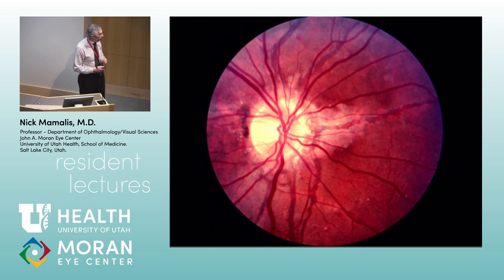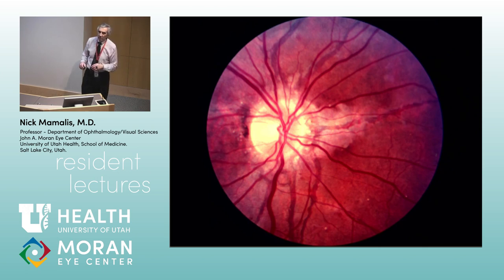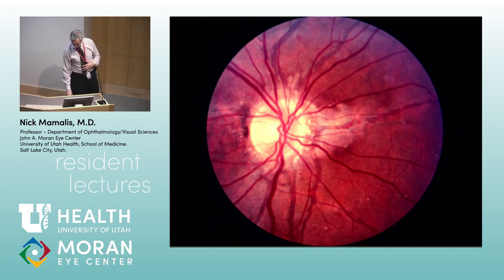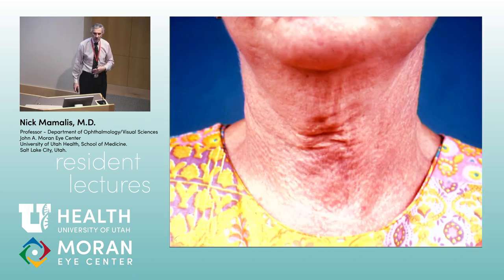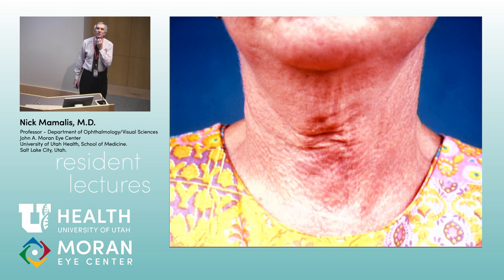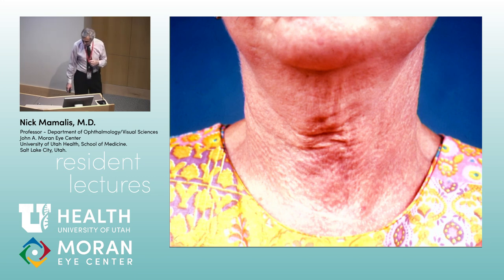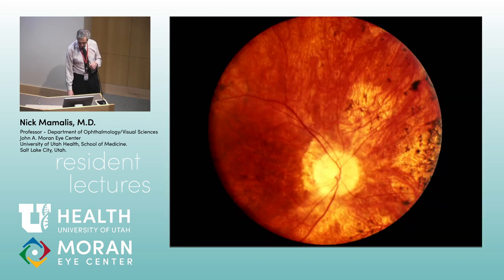These are angioid streaks — located under the retina in Bruch's membrane itself. You get brittle Bruch's with focal breaks; that's why they're called angioid (vessel-like). Why show a picture of a lady's neck? The association: pseudoxanthoma elasticum causes a 'plucked chicken' skin appearance. Angioid streaks are associated with pseudoxanthoma elasticum. They can also occur in sickle cell disease.